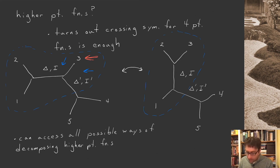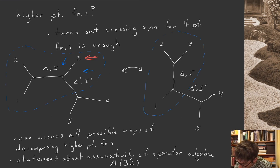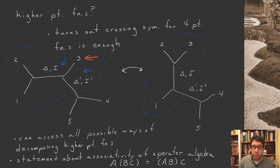More formally, this is a statement about associativity of the operator algebra. If I have a product of three operators I can compute (a)(bc) — multiplying b and c first — or (ab)(c) — multiplying a and b first. In the OPE language, I can bring b and c close together and then bring the result close to a, or bring a and b close together first and then join with c. This is the idea of crossing symmetry: it's associativity of the OPE of conformal primaries.